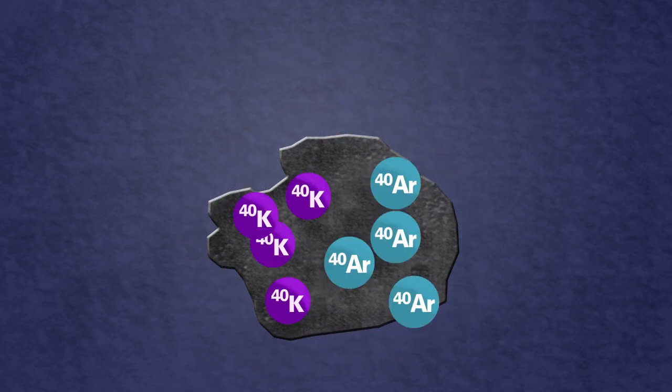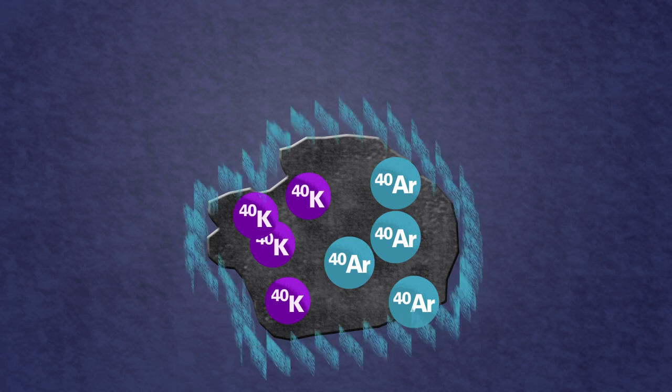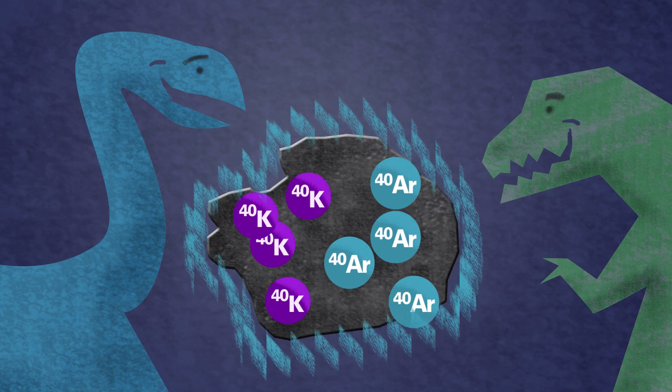For example, if there is an equal amount of potassium and argon, then the rock would have solidified 100 million years ago, long before the dinosaurs became extinct.